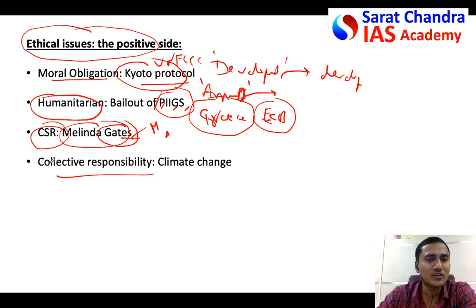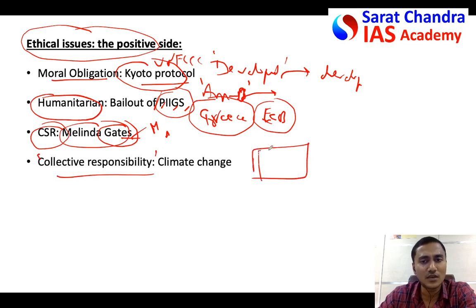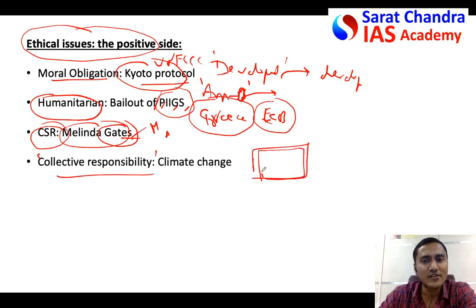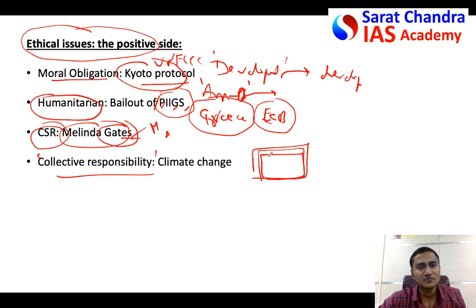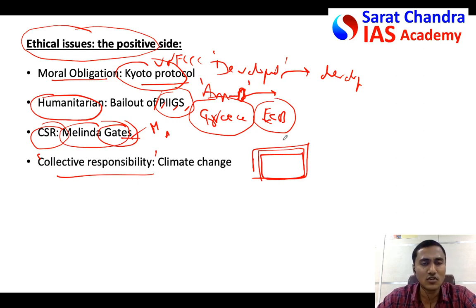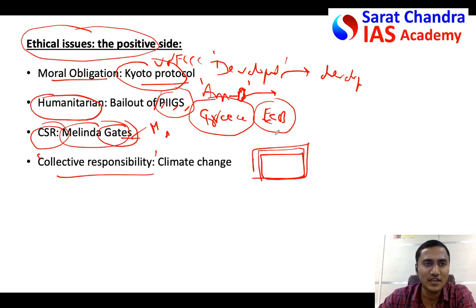Similarly, collective responsibility is another positive aspect. Due to globalization, the entire world is becoming a global village, so it is a responsibility of every country to help neighboring and poor countries come out of poverty and malnutrition. In that way, there is a lot of positive angle for international funding.